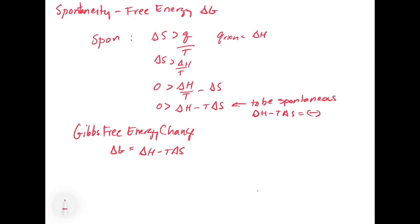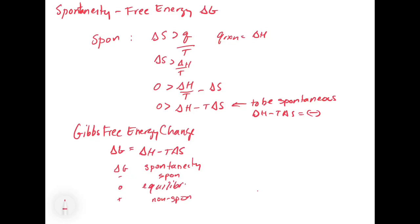We can use this to predict spontaneity. For delta G, we can have a negative, a zero, and a positive. A negative delta G means the reaction is spontaneous, and a positive delta G means the reaction is non-spontaneous. At zero, the reaction has no preference for products or reactants — it can go in either direction. We call this equilibrium.